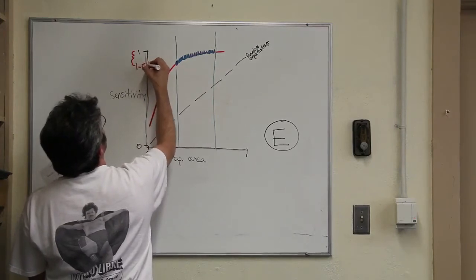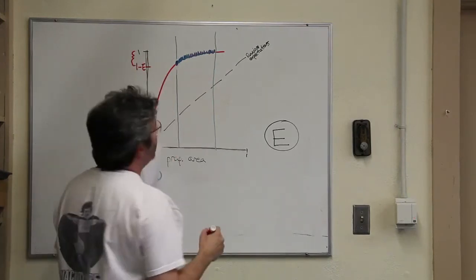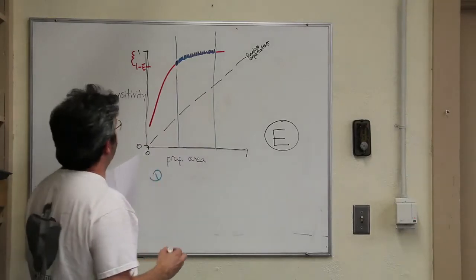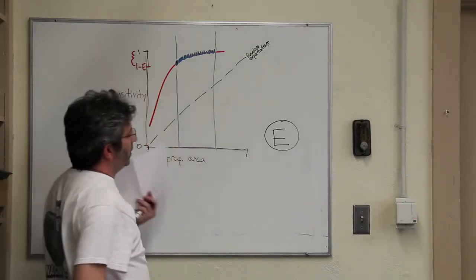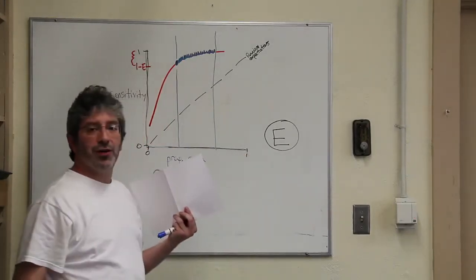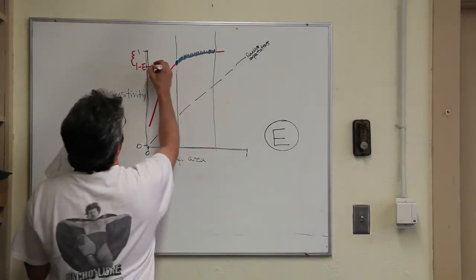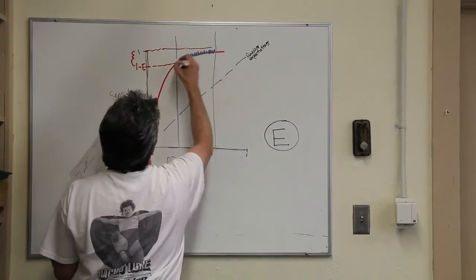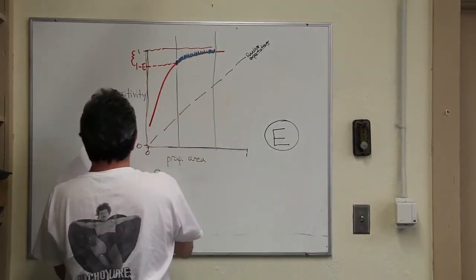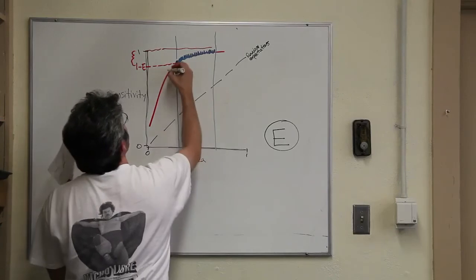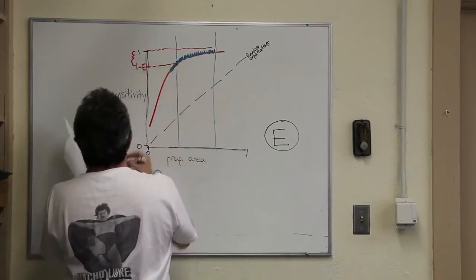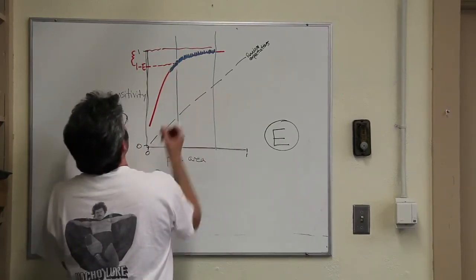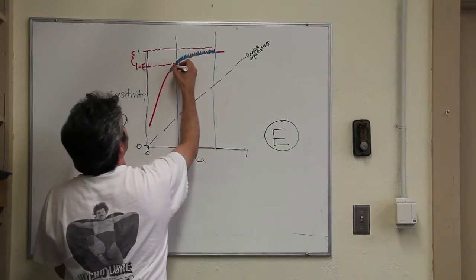And so this right here would be 1 minus E. Essentially, that's how much omission error I'm willing to tolerate. Well, I need to bring that over. And any prediction, let's imagine that this actually went lower. Any prediction that is outside of that interval,